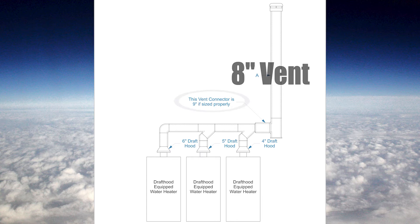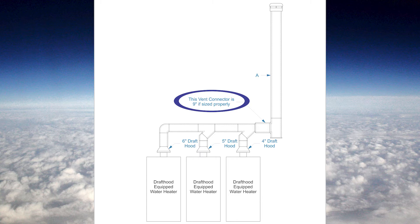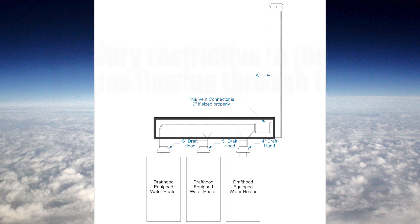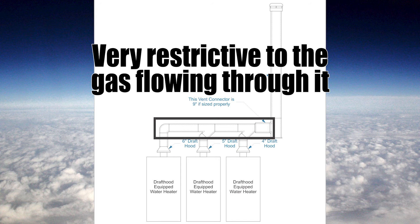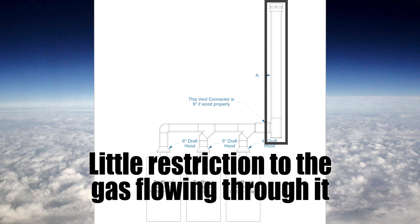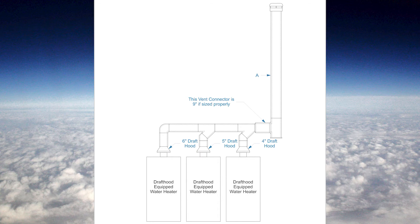Notice the vent connector there is listed as nine inches. Yes, the vent can be smaller than the vent connector. The vent connector is horizontal and therefore much more restrictive, whereas the vent is straight up and down so there is very little resistance. So the vent can be smaller than the vent connector.